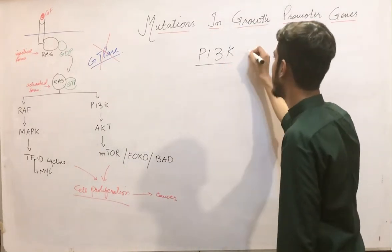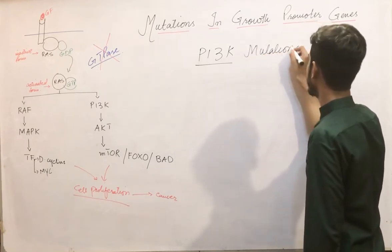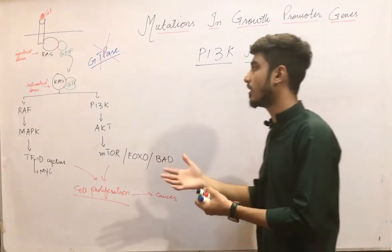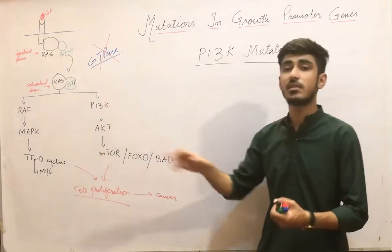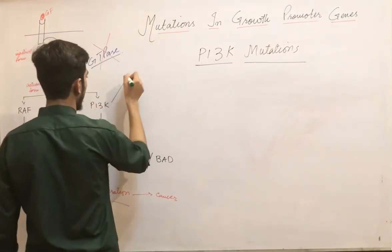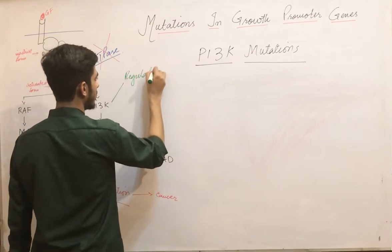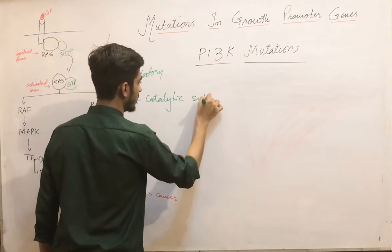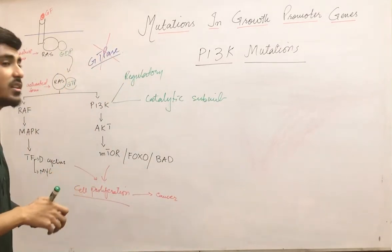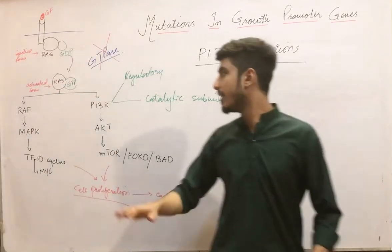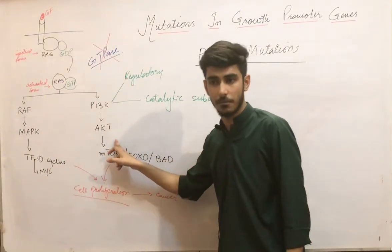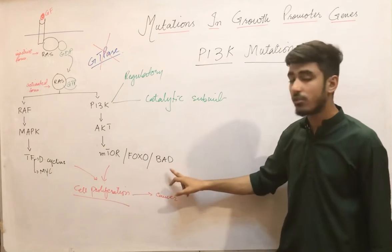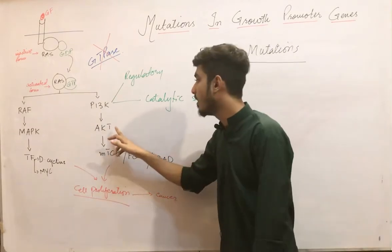PI3K (phosphoinositol 3-kinase) mutations — normally, PI3K has two subunits: a regulatory subunit and a catalytic subunit. Its normal function is to activate the AKT pathway. AKT has three substrates.